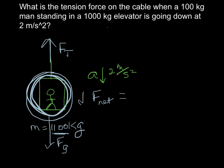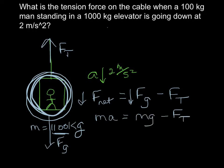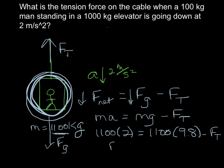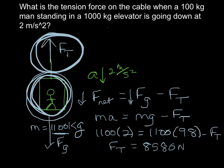Since we're accelerating downwards, our net force is downwards, so we take our gravitational force and subtract our tension force: mass times acceleration equals mass times gravity minus tension force. 1,100 times 2 equals 1,100 times 9.8 minus the tension force. The tension force comes out to 8,580 newtons. If the elevator was going up, we would expect a bigger tension force, because then the tension force would have to overcome the gravitational force.